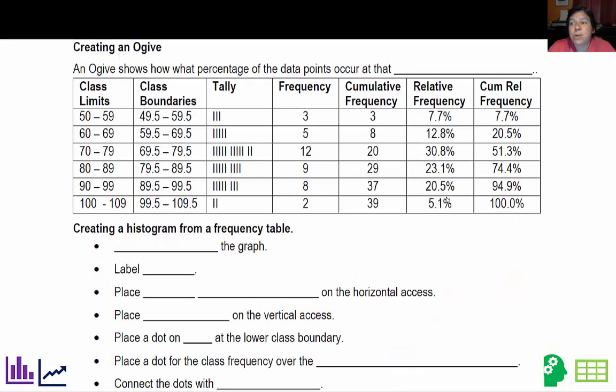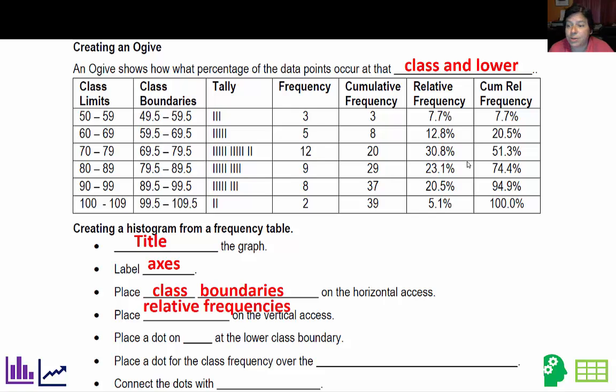So last but not least is creating an ogive, and that shows the percentage of the data points that occur in that class and lower. It's basically using the cumulative relative frequency. So we have pretty much the same steps. You're going to title, label your axes, use the class boundaries like before. We're going to place the relative frequencies on the vertical axis like we did on the other graph. But here's where we change. We place a dot on 0% at the lower class boundary.